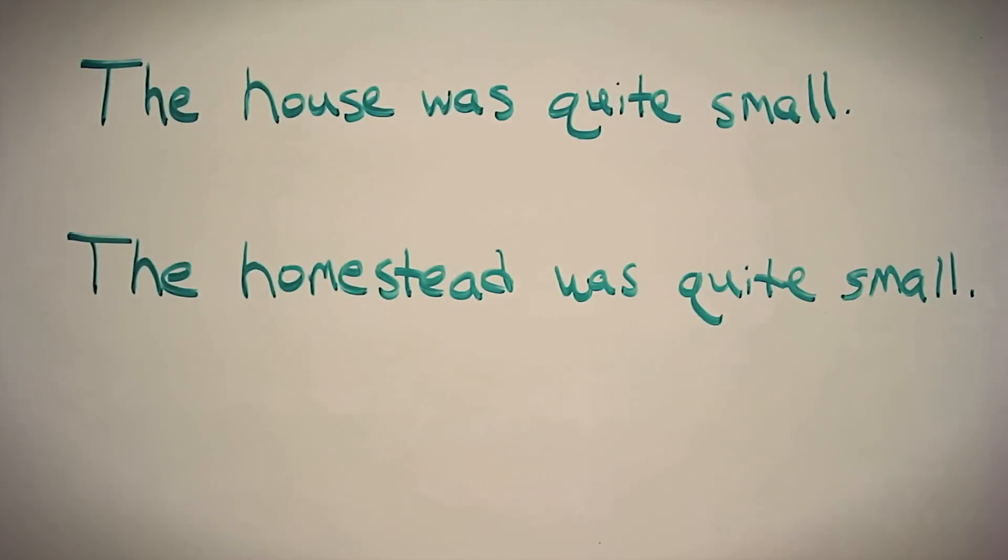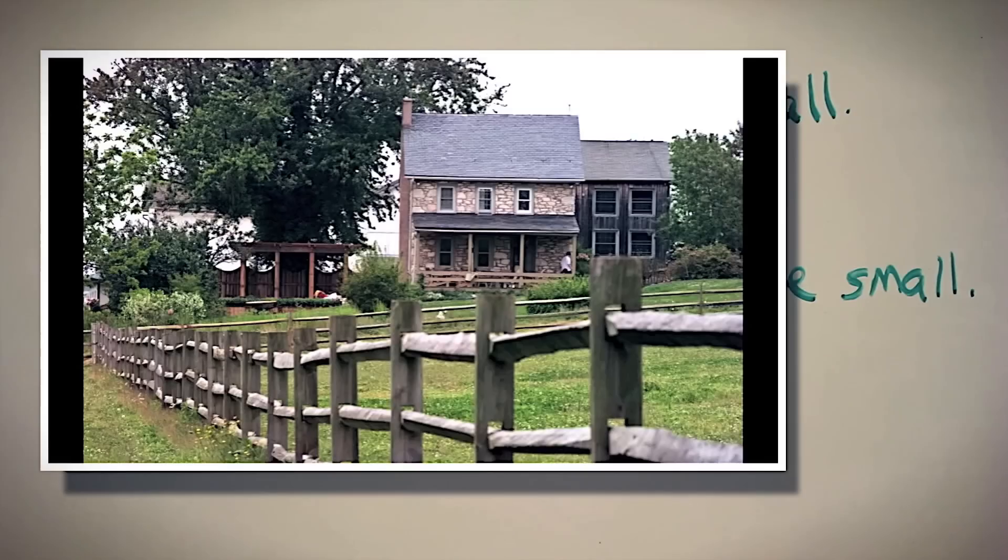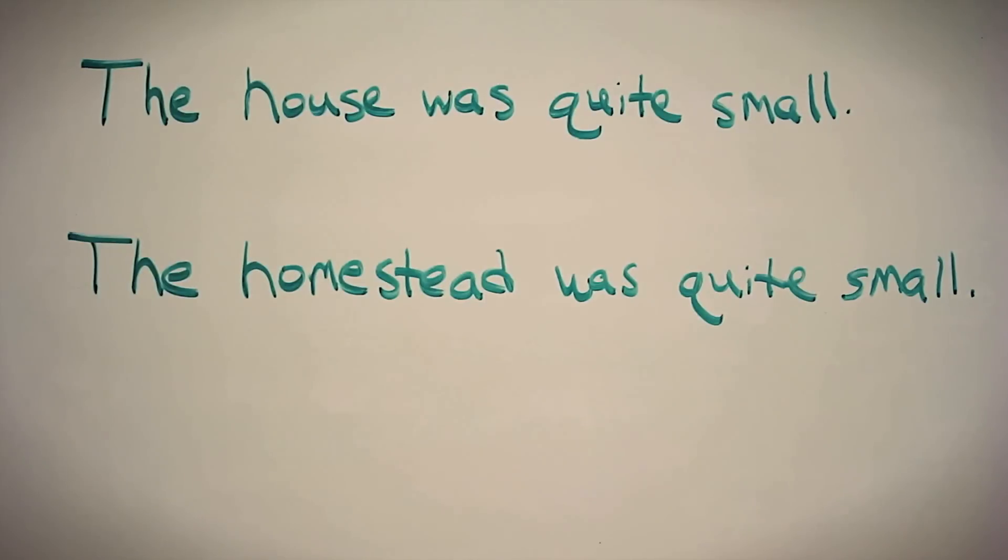The definition of house is a building for human habitation, especially one that is lived in by a family or small group of people, whereas homestead means a house, especially a farmhouse. Not only do these words have different definitions, but they have a slightly different feel to them as well. So just by changing this one word, house to homestead, we have created a different shade of meaning for the entire sentence.